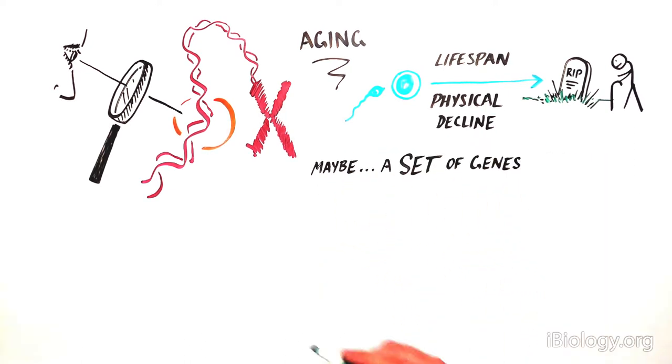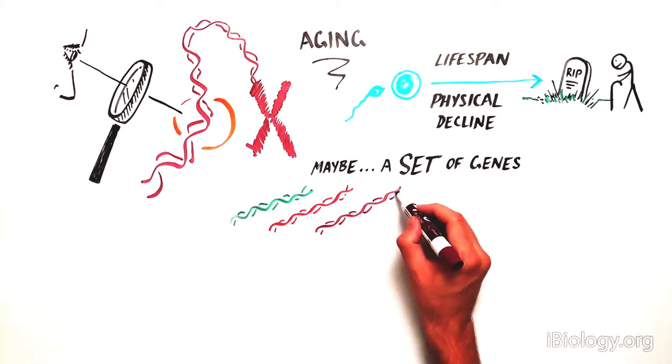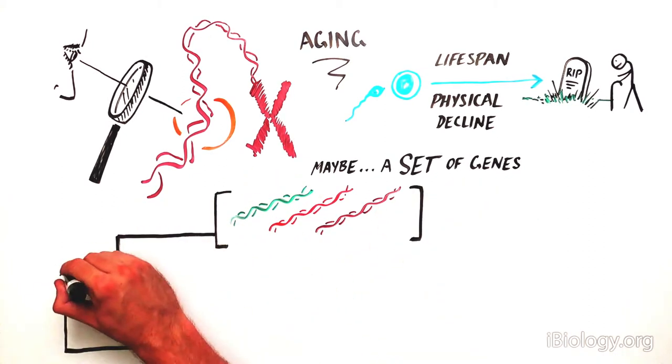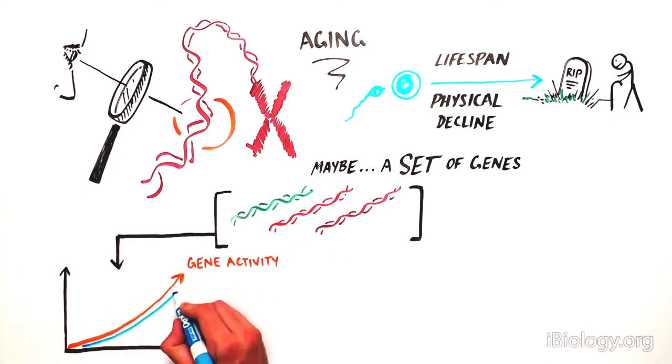Perhaps there is one or a set of genes whose activity controls the rate of aging. Maybe these genes are activators of aging. When they are highly active, for example, aging may take place more quickly.